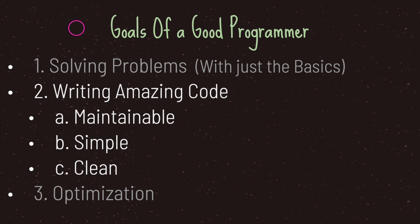No matter the industry, programmers are sought after to do three things: one, we solve a problem — and if you're a beginner in this series, knowing the basics is enough to solve many problems with game programming. For the next six episodes we're going to focus on writing good code. Good code has three things: it's maintainable, it's simple, and it's clean.